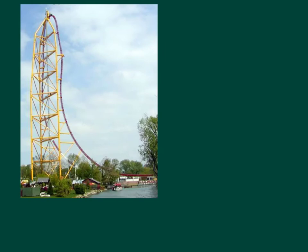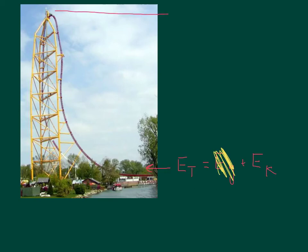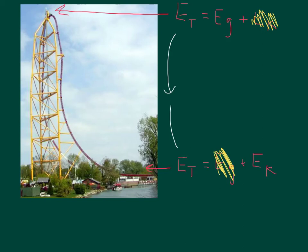We want to figure out what speed you need at the bottom. The total energy of the system is a combination of gravitational potential energy and kinetic energy. You're at the bottom of the hill, which means there is no height, so EG goes to zero. When we get to the top, we assume again that the roller coaster stops for a split second, so the total energy will be EG plus EK. But if the cart stops, there's no kinetic energy. Whatever energy we start with we have to finish with, so EG at the top equals EK at the bottom.